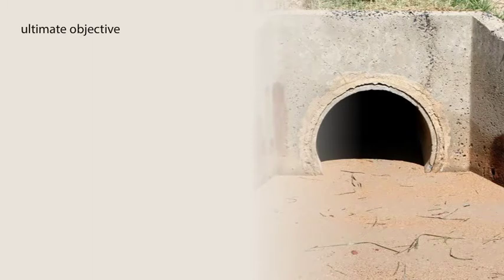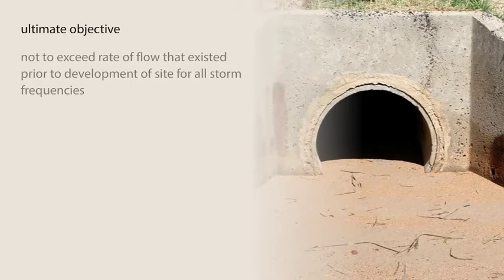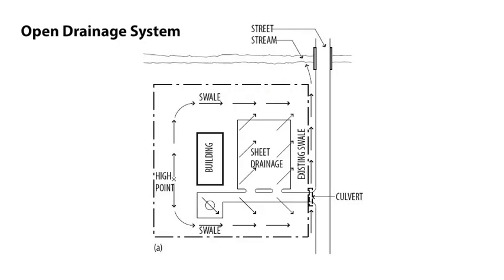The ultimate objective in designing most storm drainage systems is not to exceed the rate of flow that existed prior to the development of a site for all storm frequencies. In an open drainage system, all surface runoff from paved and unpaved areas is collected and conveyed on the ground primarily by swales. The system is discharged or directed to an on- or off-site drainage way, stream, or other natural water course, an existing street, or municipal storm drainage system.